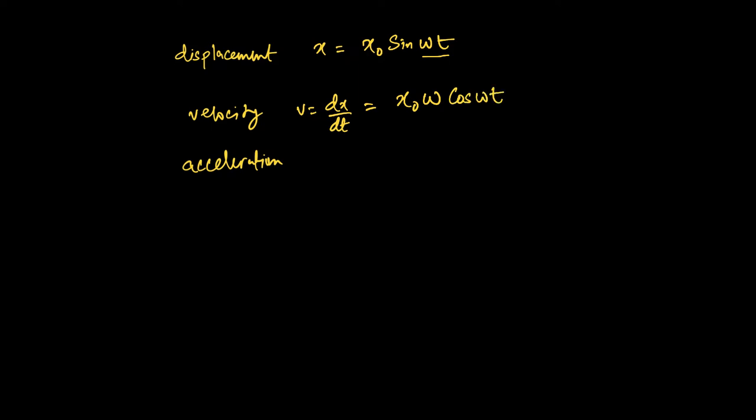And then similarly, what is acceleration? Acceleration equals dv by dt. So if we plot this out once again, x naught is a constant, it'll stay out there. This omega is going to come back out again, so this makes it x naught omega squared. And then what is the derivative of cosine? It's negative sine, so there's going to be a negative function out there—negative sine omega t.